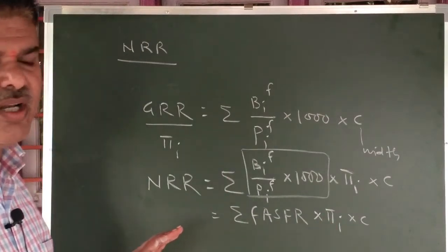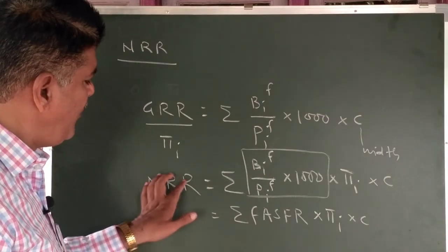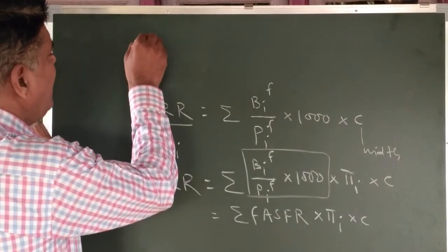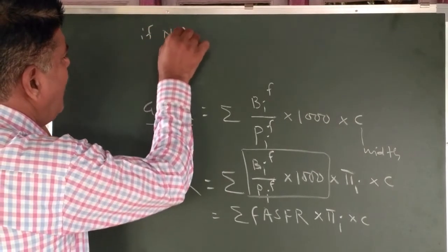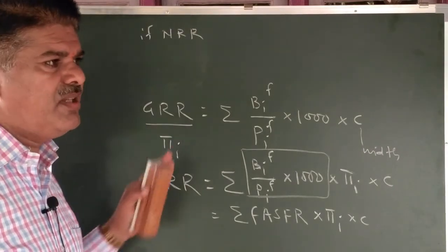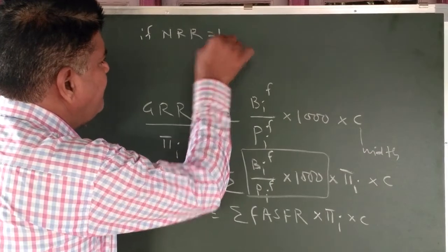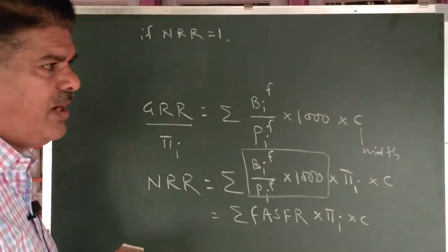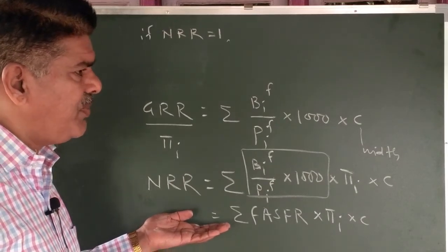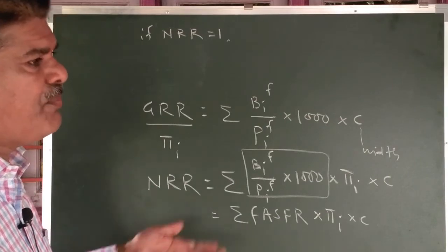How do we interpret NRR? If NRR equals 1, this means that today's mothers are replaced by future mothers in exactly the same proportion — the potential mothers and today's mothers are the same. So if NRR equals 1, the population remains constant.